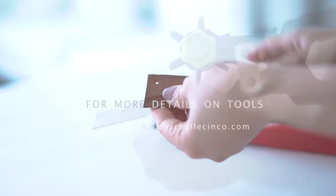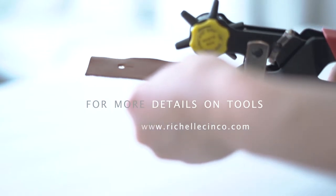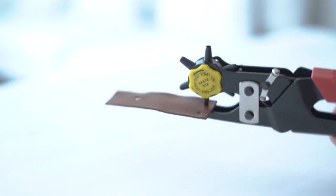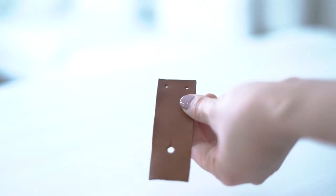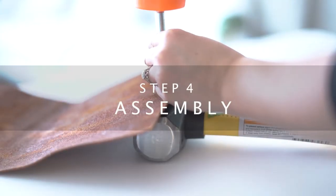For more details and tools, visit my blog in the description below. Step 4: assembly. Using the rivet setter and a soft hammer, add the rivets and screws.